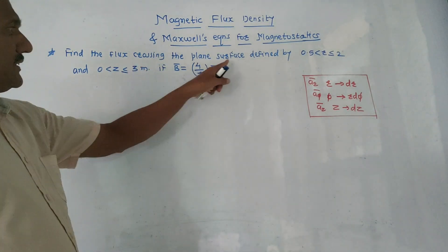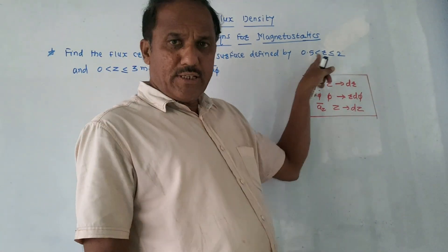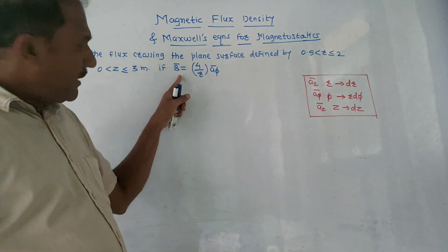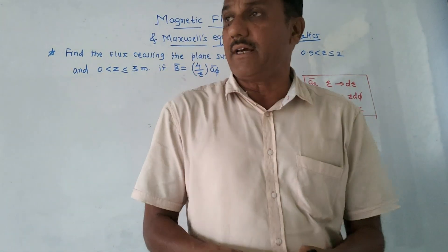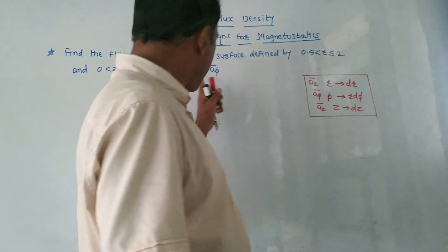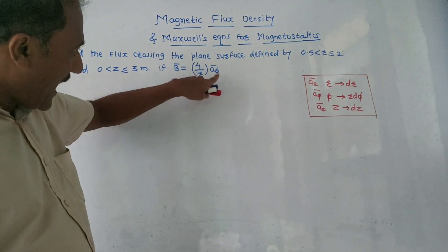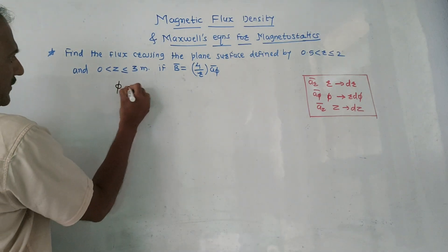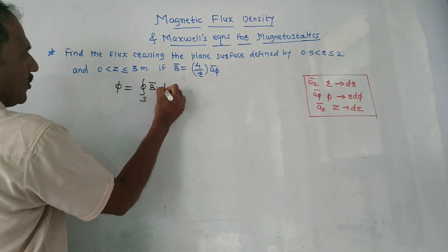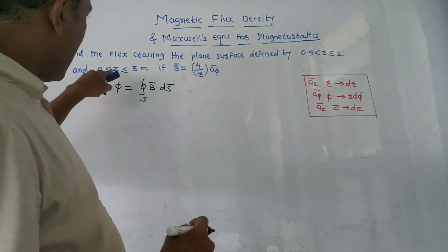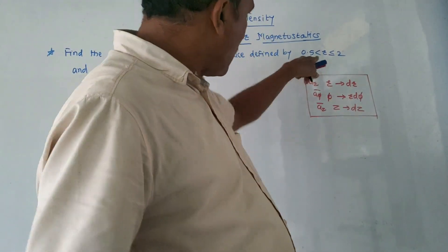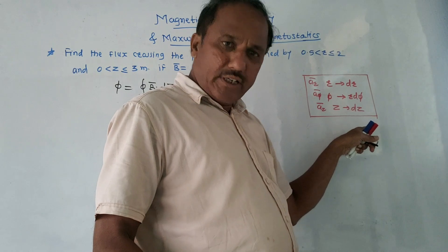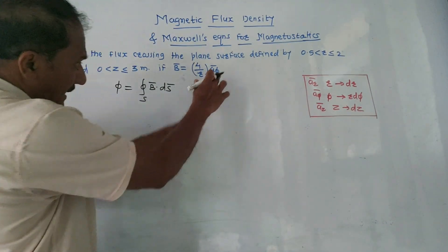Next problem: find the flux crossing the plane surface defined by 0.5 ≤ r ≤ 2 and z from 0 to 3 meters, given that B-bar equals 4/r in the a-φ direction. This numerical is simpler compared to the earlier one because B-bar is directly given. The coordinates r, φ, z indicate cylindrical coordinate system, same as before. We use the formula Φ equals the closed surface integral of B-bar dot dS-bar.